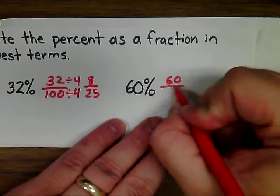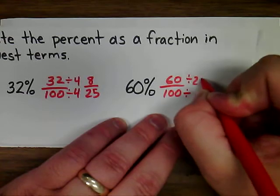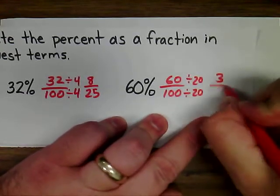And in this case, you would do 60 over 100, and divide by their greatest common factor, which would be 20, and you'd get 3 over 5.